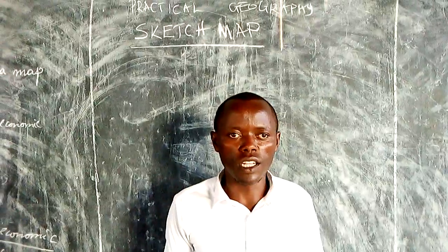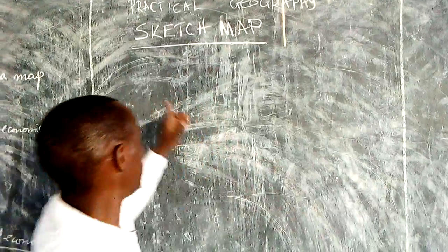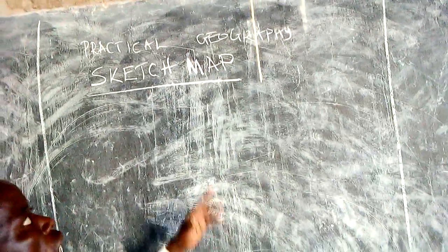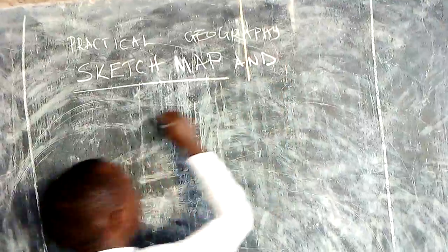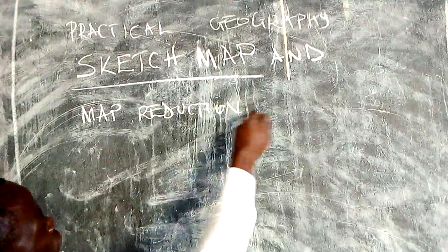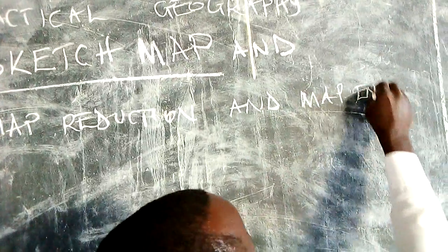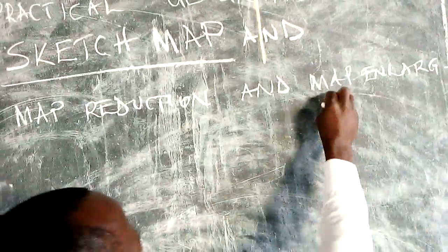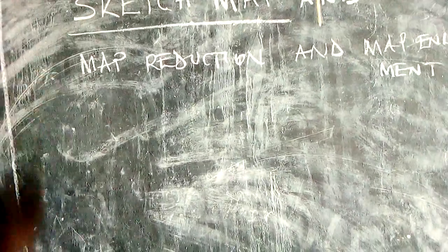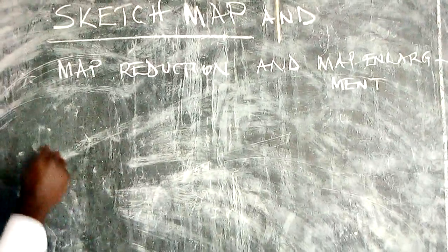Welcome once again to Keep On Learning Online Class. My name is Teacher Emanuel, a teacher of geography. Today we are going to learn geography where we are still on practical geography. Our intention today is about a sketch map, map reduction, and map enlargement. So let's start by a sketch map.